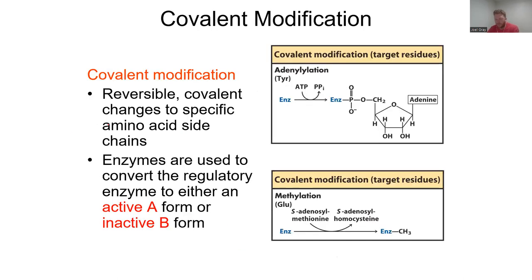Moving on to our next level of our discussion of regulation, we have covalent modification. Every enzyme is made up of amino acids. If you talk about cysteine, cysteine undergoes a covalent modification with other cysteines to form a disulfide bond. So that's not too crazy of an idea. With that in mind, there are other amino acids that can undergo covalent modification. Covalent modification consists of the reversible covalent changes to specific amino acid side chains. These are side chains that are within a polypeptide, within a protein. Enzymes are used to convert the regulatory enzyme to either active or an inactive form.